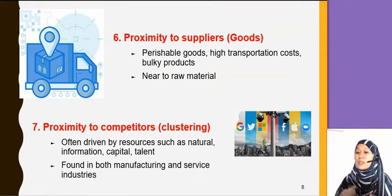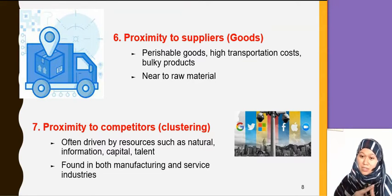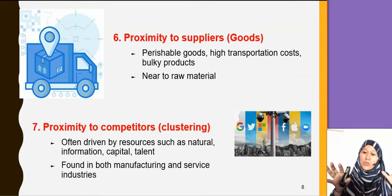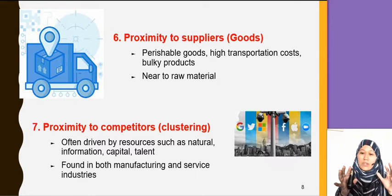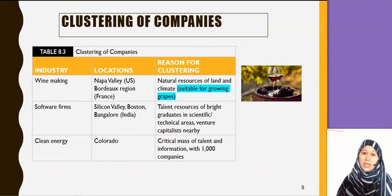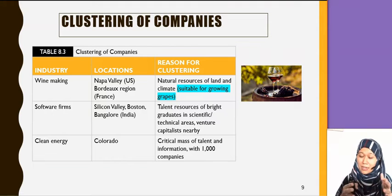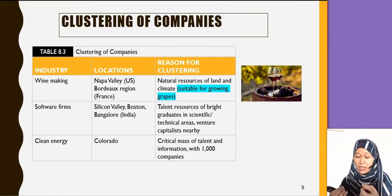The last factor is proximity to competitor — clustering. Clustering is when industries are gathered in one area. For example, Silicon Valley in California — that's where Google, Twitter, Facebook, Microsoft, Netflix all started, all clustered in the same area. Wine making is clustered in Napa Valley in the US and France, sebab the natural resources, tanah, and weather there are suitable for grapes to make wine.